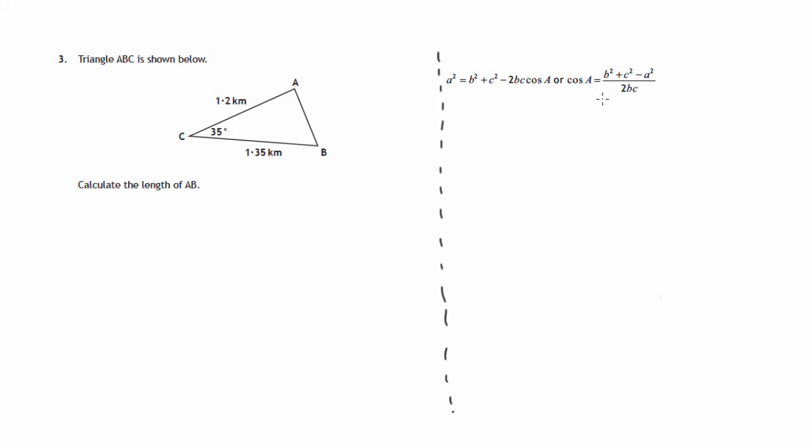In your formula sheet this is what's given to you as the cosine rule, little a, b's and c's and capital A's and so on. These refer to the angles and sides in triangle ABC. The side opposite angle a is known as little a, the side opposite angle b is known as little b, and the side opposite angle c is known as little c.